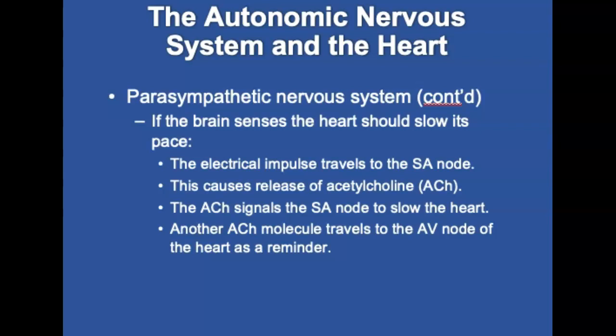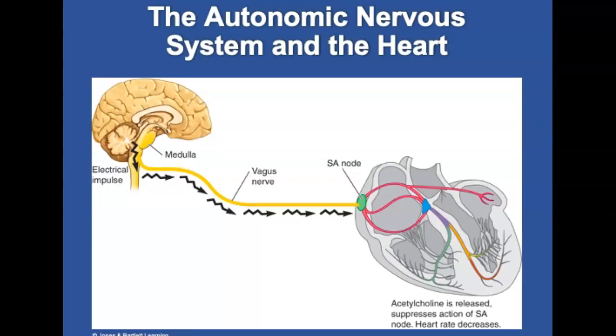The electrical impulse stimulates the release of acetylcholine. Acetylcholine crosses over the SA node and signals the node that the brain wants the heart to decelerate. Another acetylcholine molecule travels to the AV node to ensure no additional impulses get through. Acetylcholine is then broken down by acetylcholinesterase. Atropine opposes the action of acetylcholinesterase, thereby accelerating the heart rate. This figure shows an example of an electrical impulse stimulating the release of a chemical.